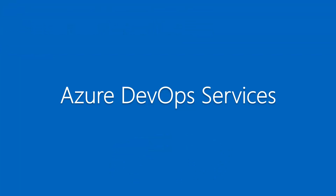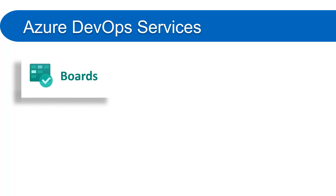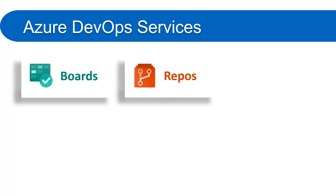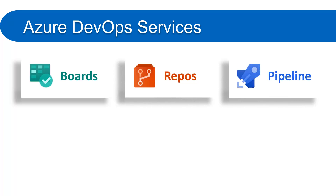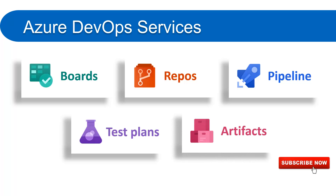Now let's look at the main services available in Azure DevOps. There are five services: Boards, Repos, Pipelines, Test Plans, and Artifacts. You can choose any one of them or work on all of them, but for the success of any product all five services are required.